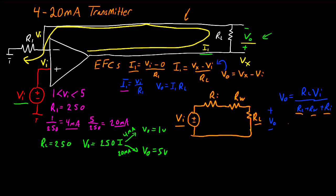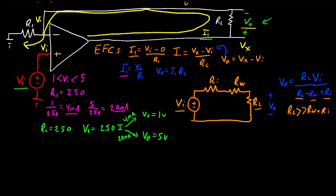And you might be thinking, well, that's fine. I can say RL is much, much bigger than RW plus RI. And this fraction right here becomes approximately 1, and VO is approximately equal to VI. And that's true. You would be able to do that. However, you introduce a new problem. And that problem is electrical noise.